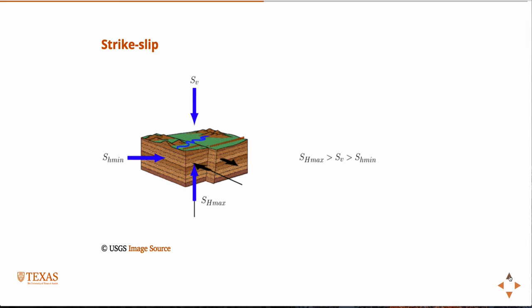There's no vertical component to SH max. By definition, it's SH, the H stands for horizontal. There's no vertical component. So, I should probably try to fix this figure.